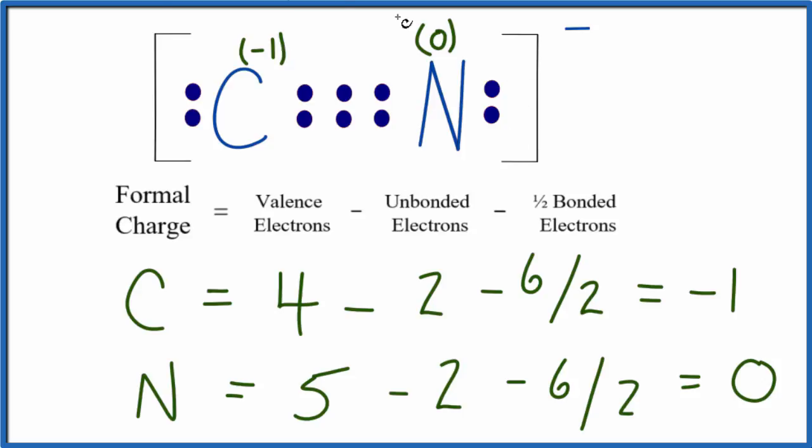on the carbon, because the overall molecule has the negative charge out here on the ion. So that's the formal charges for CN-, the cyanide ion.